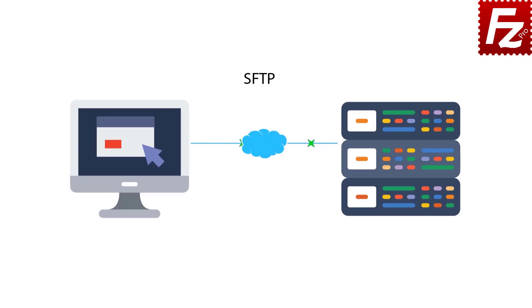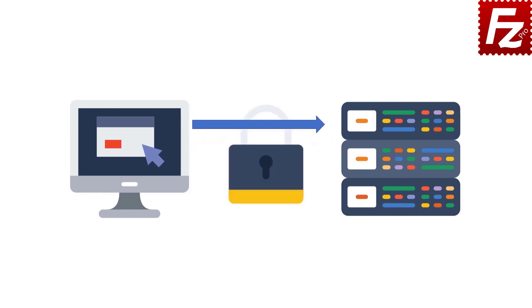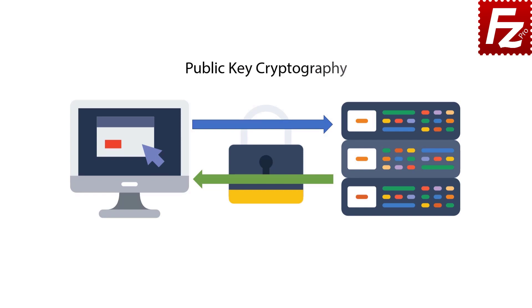SFTP stands for SSH File Transfer Protocol, while SSH means Secure Shell. SFTP is a method for moving files between computers in a network. It works differently from FTP and FTPS. SFTP is an extension of SSH. SSH is a protocol that provides a secure channel in a client-server architecture. SSH uses public key cryptography to authenticate the server. To authenticate the client, public key cryptography can be used, or alternatively the client can use a password.